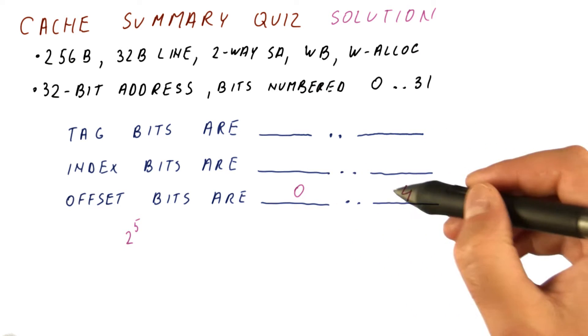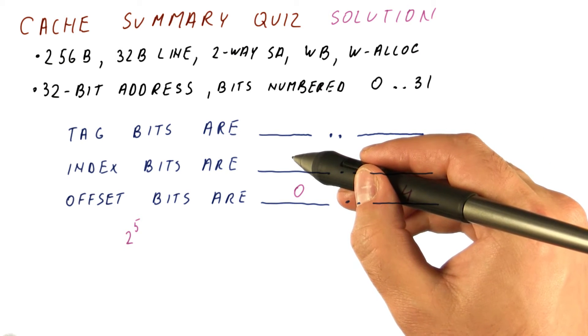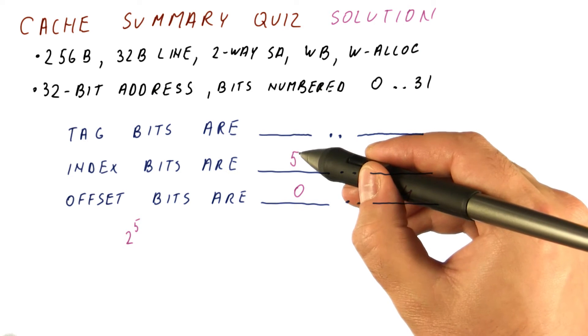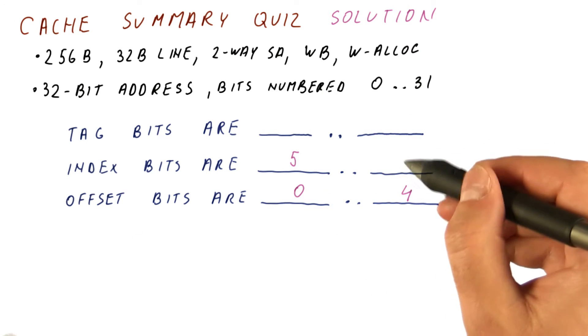The index bits are the next bits in the order of significance. So they will begin at bit five. The question is how many do we need?